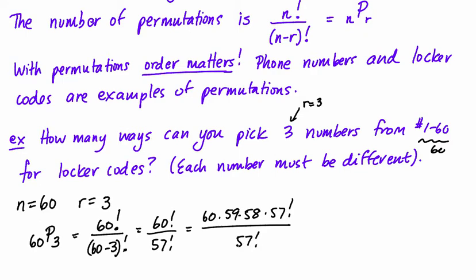So I use factorial, 57 factorial, those cancel, and I have 60 times 59 times 58.